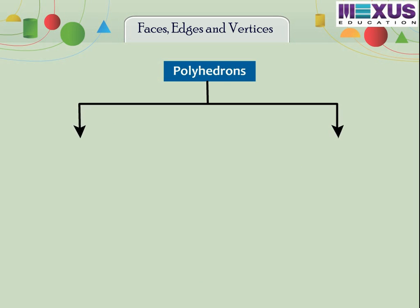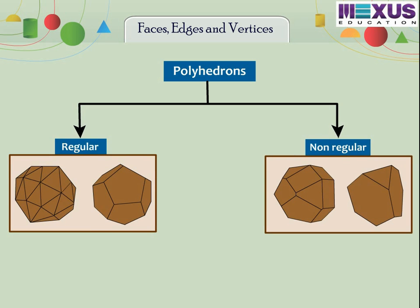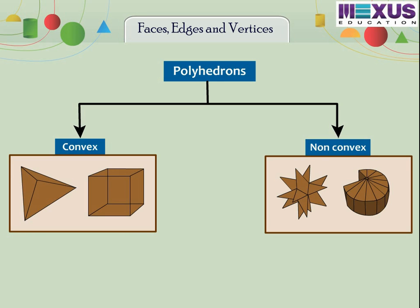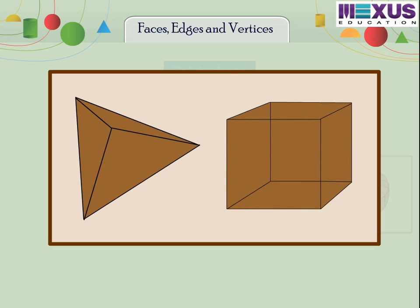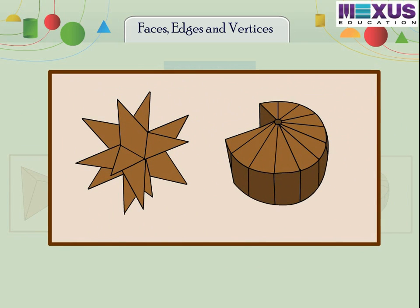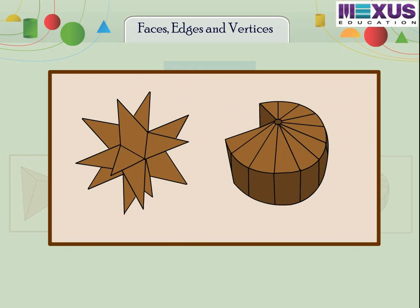Polyhedrons can be classified into convex and non-convex polyhedrons, and regular and non-regular polyhedrons. First, let us learn about convex and non-convex polyhedrons. If the line segment joining any two points on the surface of the polyhedron lies on the surface and does not intersect itself, it is called convex polyhedron. The idea of convex polyhedron is similar to convex polygon. And if the line segment joining any two points on the surface of the polyhedron does not lie on the surface, then it is called a non-convex polyhedron.